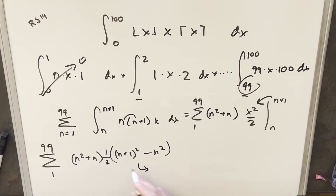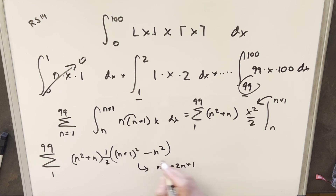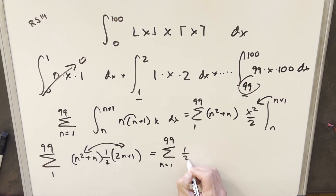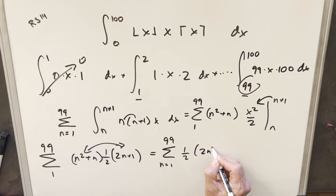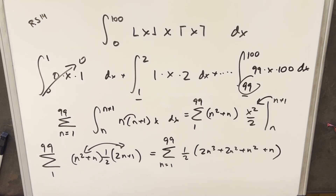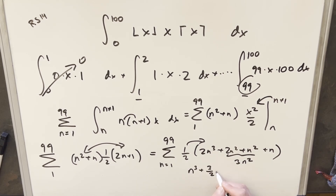Let's simplify. Multiplying out n plus 1 squared gives n squared plus 2n plus 1, minus n squared. The n squareds cancel, leaving 2n plus 1. Multiplying these two terms together with the half out front, we get 2n cubed plus 2n squared plus n squared plus n, which combines to 2n cubed plus 3n squared plus n. Distributing the half, we end up with n cubed plus three-halves n squared plus one-half n.